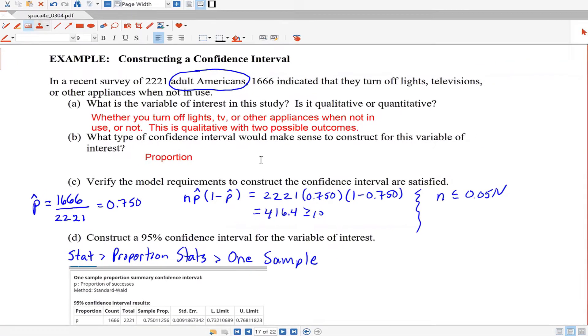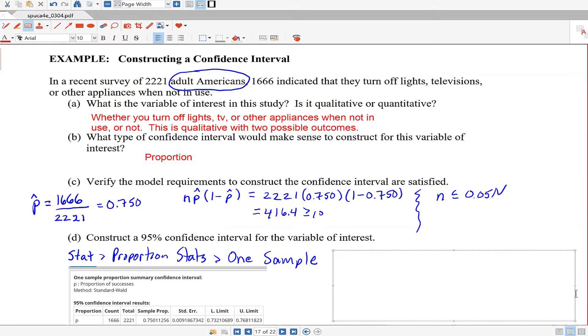We can see here that the lower bound on the confidence interval is 0.732, and the upper bound is 0.768. So we would say we are 95% confident the proportion of adult Americans who turn off lights, televisions, or other appliances when not in use is between 0.732 and 0.768.